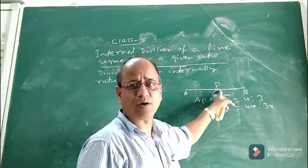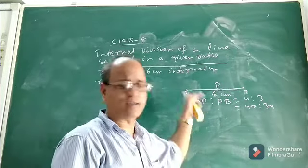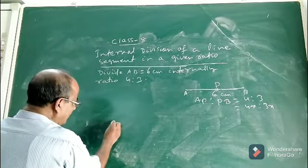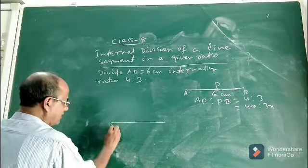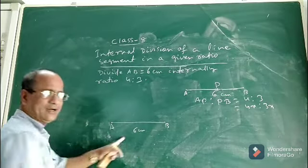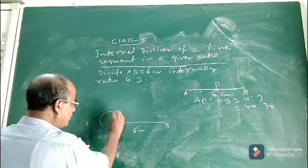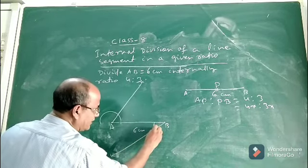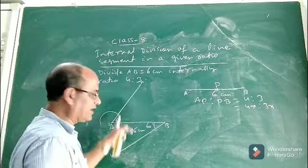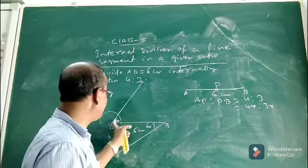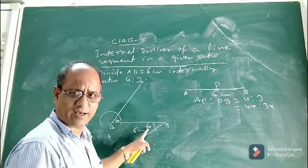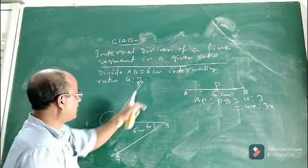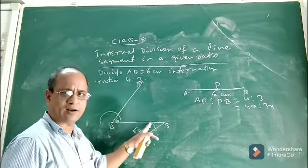So how do we get this point? That is our point of discussion — how to divide line segment AB equal to 6 cm internally in the ratio 4 is to 3. First, draw the line segment AB equal to 6 cm. The second step is to draw any acute angle, say 60 degrees, at A and the same acute angle 60 degrees at B. Since these two are alternate interior angles at vertices A and B, the rays from A and B must be parallel.